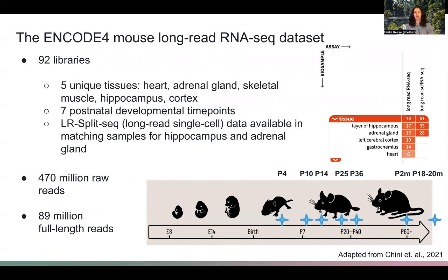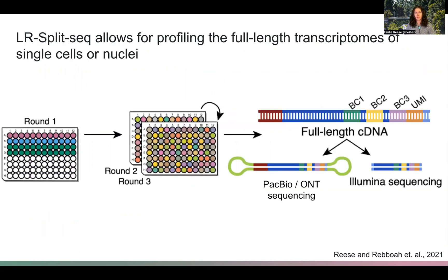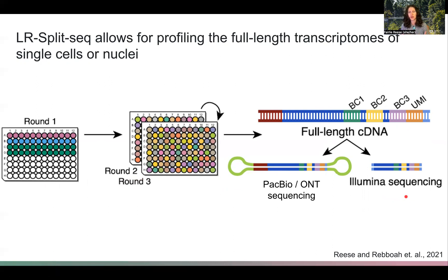We also have matching long-read single cell data called LR split-seq data available for hippocampus and adrenal glands. Long-read split-seq uses a combinatorial barcoding strategy to uniquely barcode each individual cell or nucleus. The first round of barcoding tags the cell's sample of origin, followed by a unique and random path through a plate of different barcodes, giving each cell a unique set of barcodes. This is followed up by PacBio or Nanopore sequencing as well as Illumina sequencing, so we end up with the same cells sequenced by both long-read and short-read.